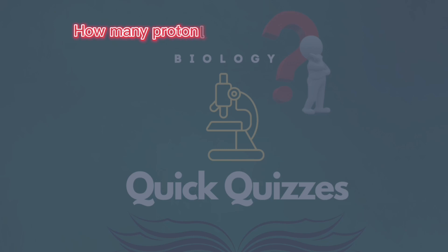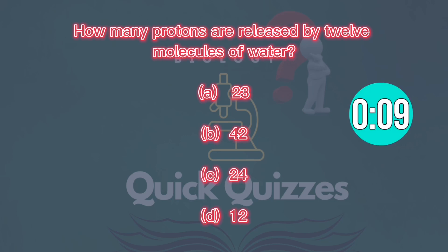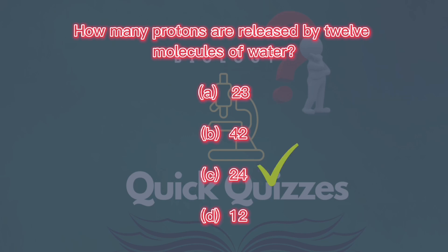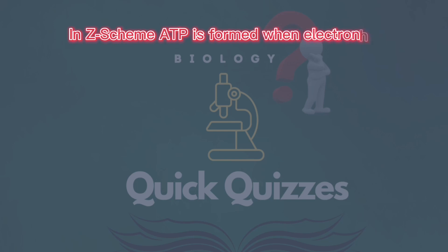How many protons are released by 12 molecules of water? A) 23, B) 42, C) 24, D) 12. Correct answer: C, 24.